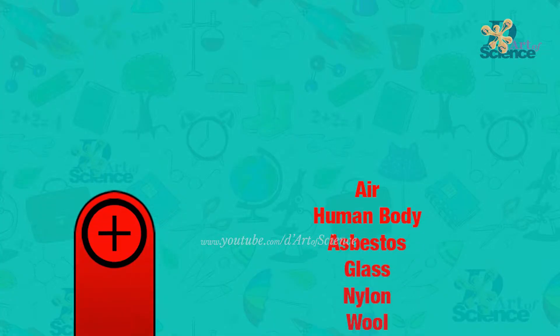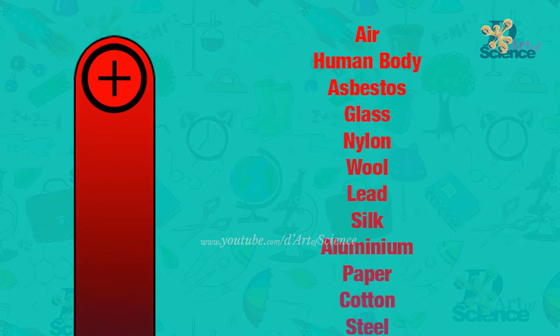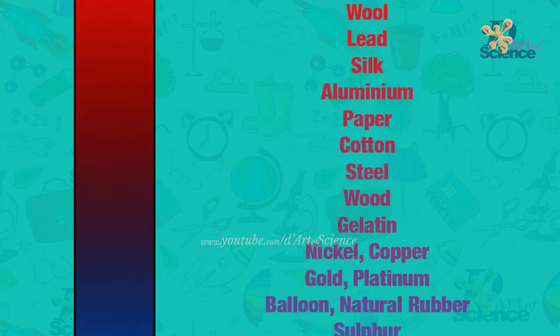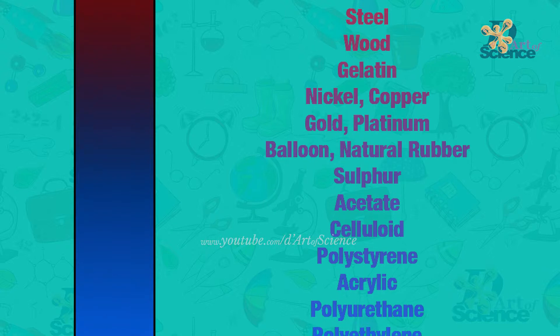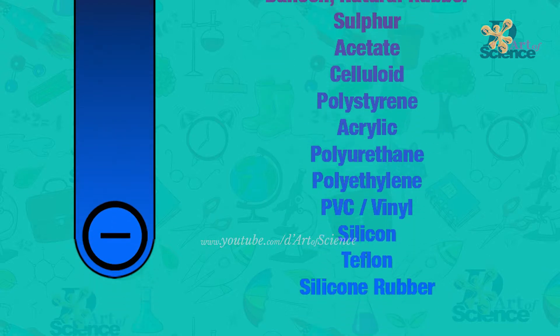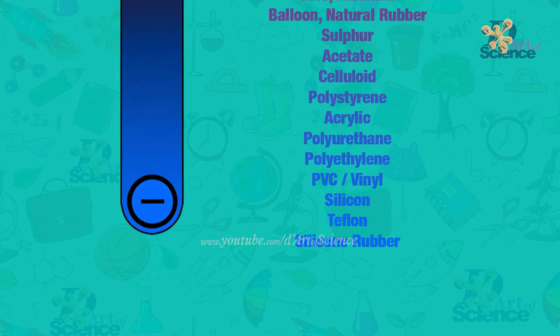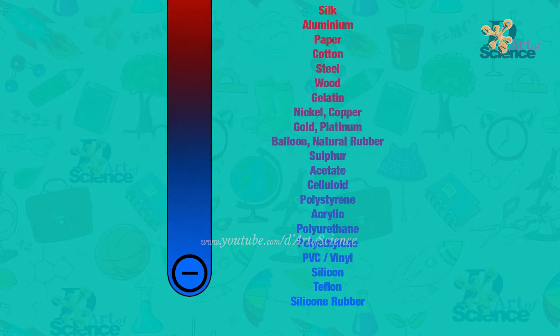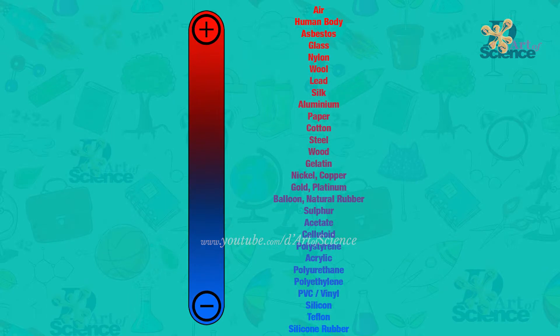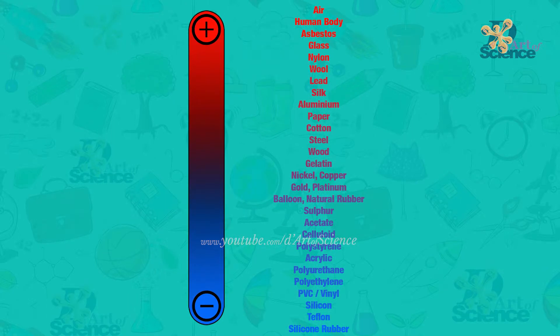The triboelectric series is a list that ranks different materials according to how they lose or gain electrons when they are rubbed with another material. On the top of this list are the objects that lose electrons and become positive, and at the bottom of the list are the ones that become negative. For best static charge, it is better to rub materials in the opposite parts of the chart, and insulators are the easiest to charge.